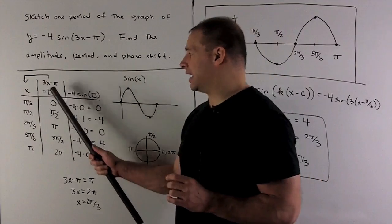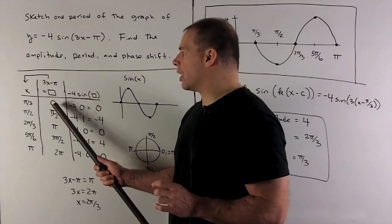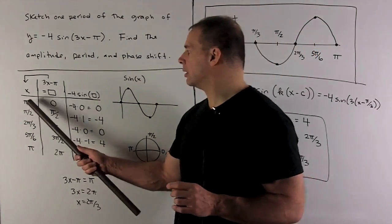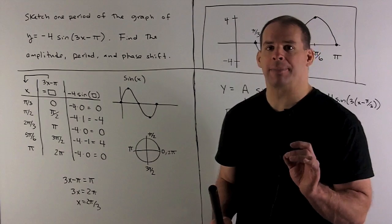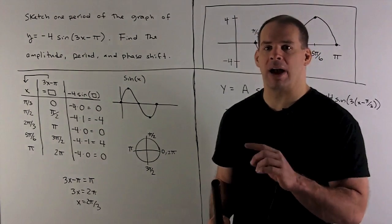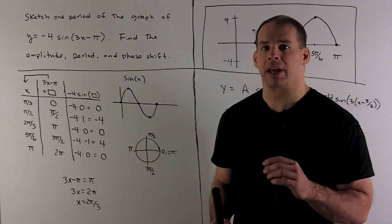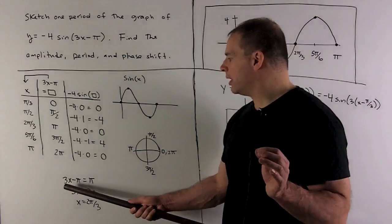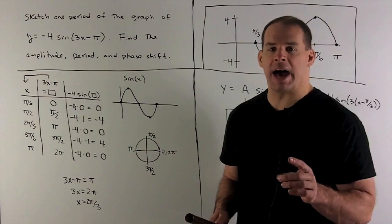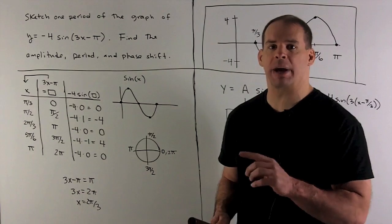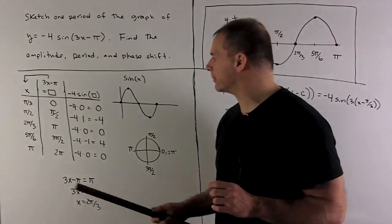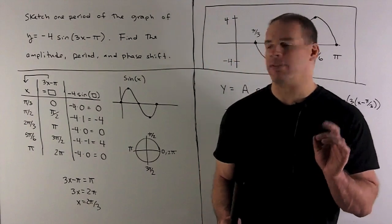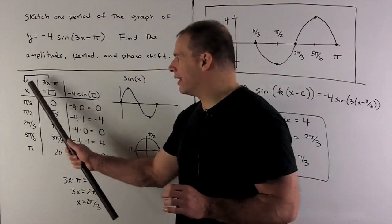For instance, I take 3x minus pi, set it equal to 0. I push the pi over and divide by 3 — that means x is going to be pi thirds. Similarly, 3x minus pi set equal to pi halves — move the pi over, get 3 pi halves, divide by 3, I get pi halves back. For pi: 3x minus pi equals pi, push the pi over to get 2 pi, divide by 3, I get 2 pi thirds. You do this for each of them, and now I have the values that I want going with the x that I want.